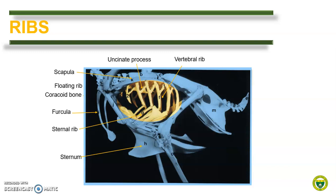In birds, the ribs are much more complicated. There are around 5 to 6 pairs of ribs present. The ribs can be classified as vertebral rib for those attached to the vertebra, and a sternal rib for those attached to the sternum. Note that in mammals, each rib has a vertebral and a sternal extremity. At the vertebral rib of the bird, we can see the uncinate process, which provides attachments for the muscles and ligaments and strengthens the thoracic wall.